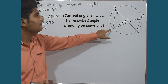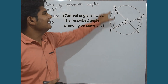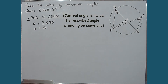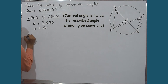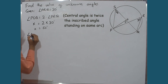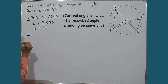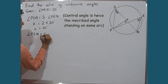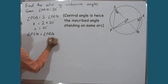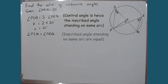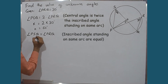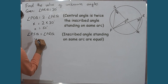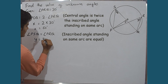Now for angle PSQ: angles PRQ and PSQ are both inscribed angles subtended by the same arc PQ, so angle PSQ is equal to angle PRQ. Therefore, angle PSQ is equal to 30 degrees, so the value of y is 30 degrees.